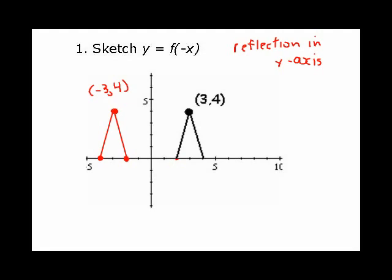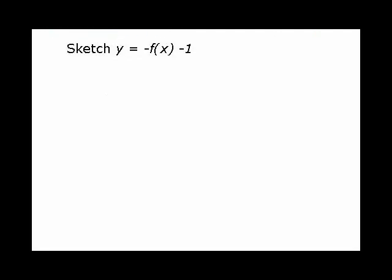Then I'm going to take that same graph and do a different transformation. We've got y equals negative f at x minus 1. This is a reflection in the x-axis. I've actually got two transformations. It's also a vertical translation of one unit down.